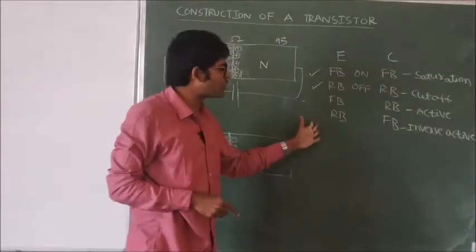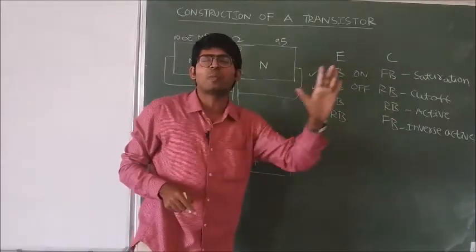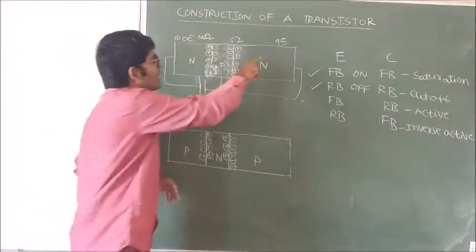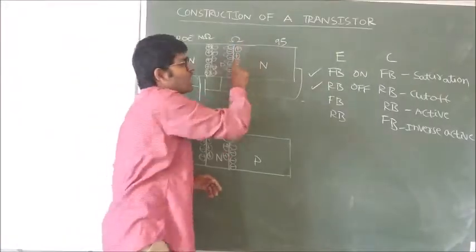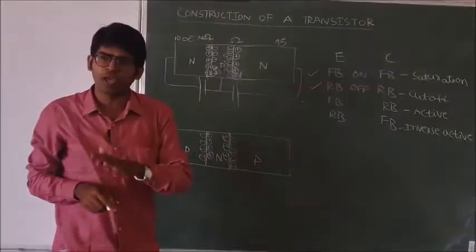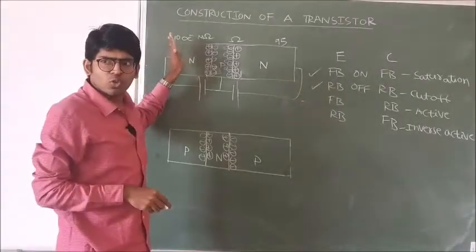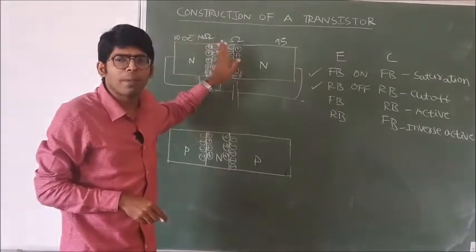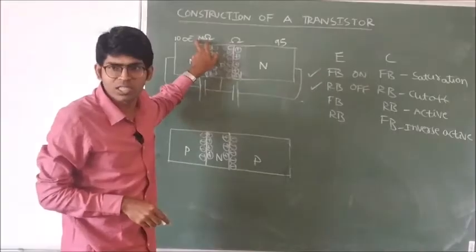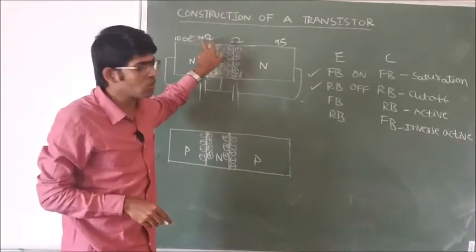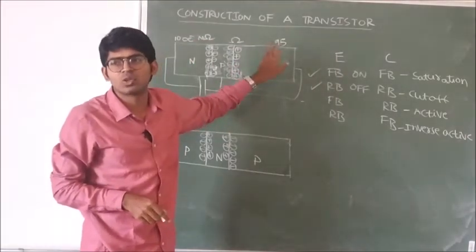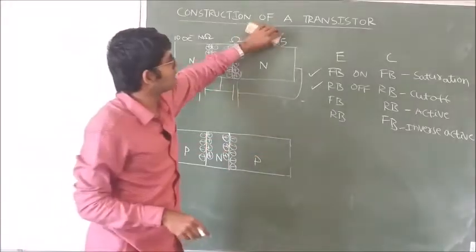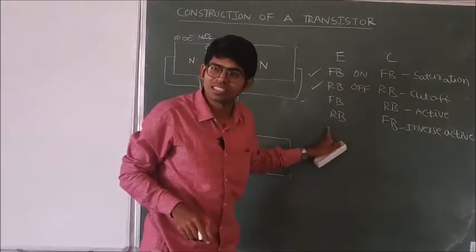Next they checked the reverse bias and forward bias condition — the inverse active region. The reverse-biased junction offers mega ohms resistance and the forward-biased junction offers a few ohms resistance. The 100 electrons are not able to reach the base because of the mega ohms resistance, so the number of electrons reaching the collector is very less, and the transistor simply acts like a resistor.